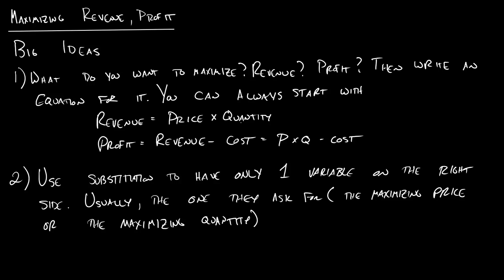And so the big ideas, I don't want to dwell on these too much because we'll be reinforcing them as we go through the examples. But the big ideas are we're going to start by writing the equation for what we want to maximize. And it can just be a general equation to start off with. So revenue, you could start by just writing that's equal to price times quantity. Or profit, we could start by writing that's equal to revenue minus cost. Or since revenue is price times quantity, that'd be price times quantity minus cost.